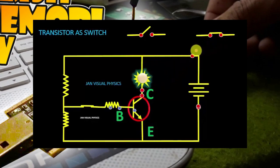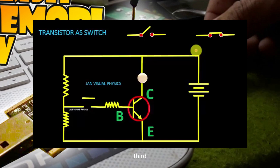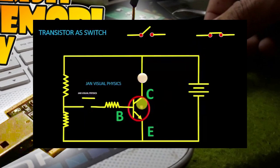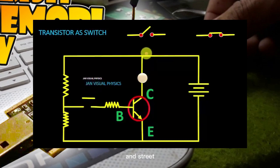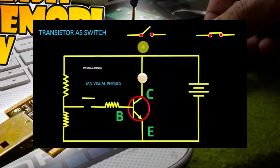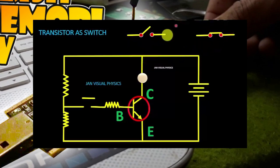If we remove the signal from the base, we will see that current will not pass through the transistor. In this state, the transistor behaves like an off switch. So a transistor can behave as an on switch or off switch.